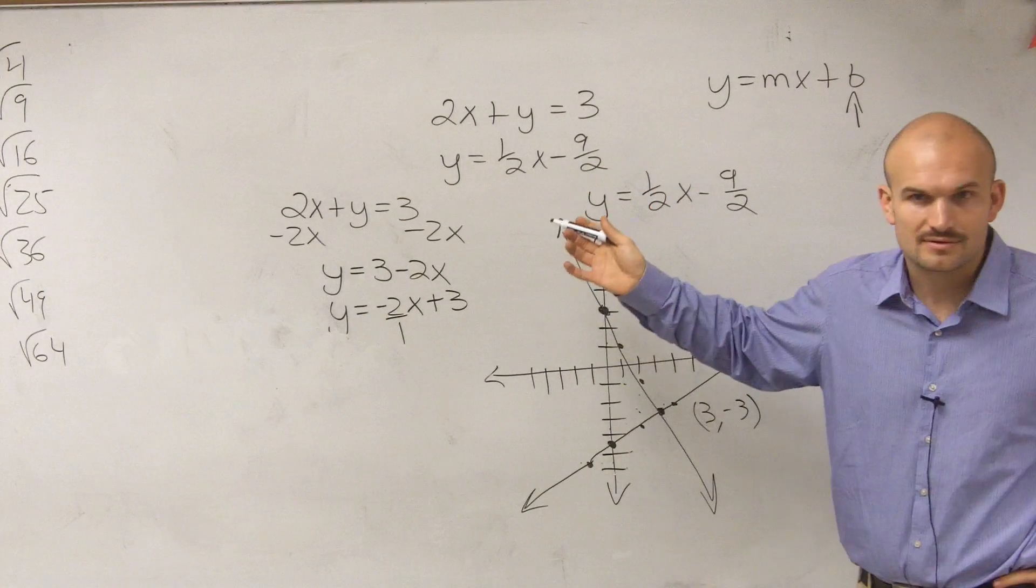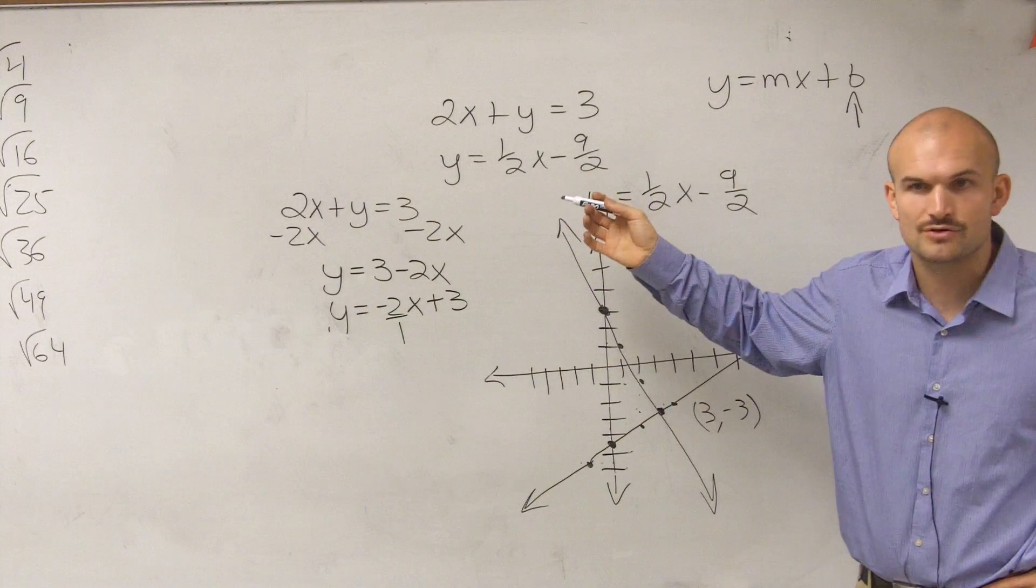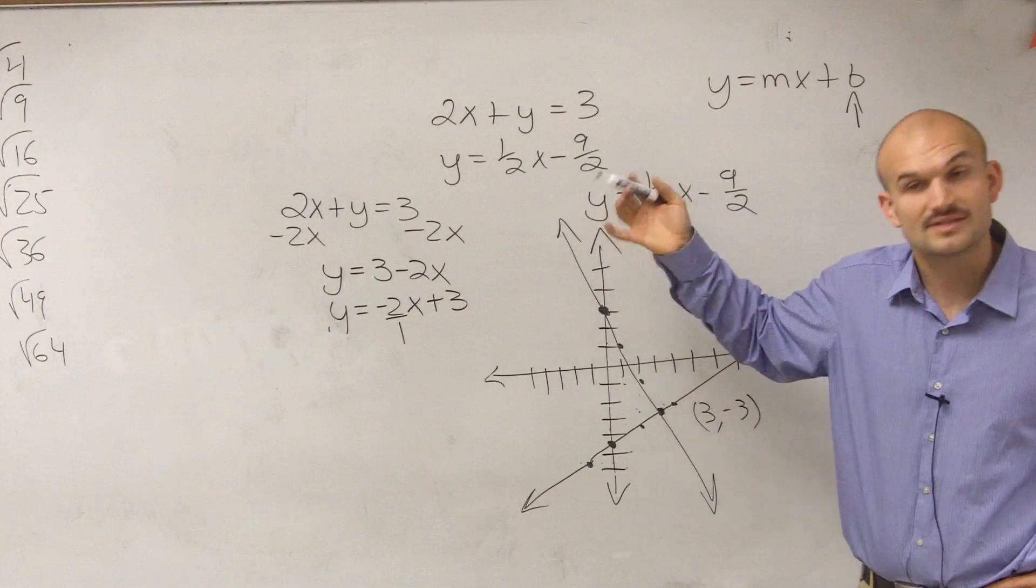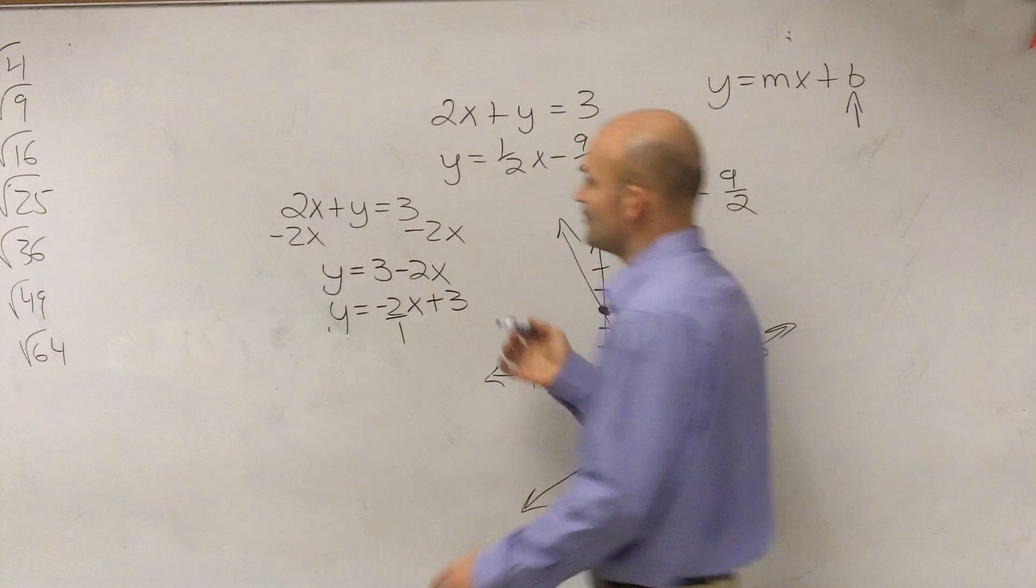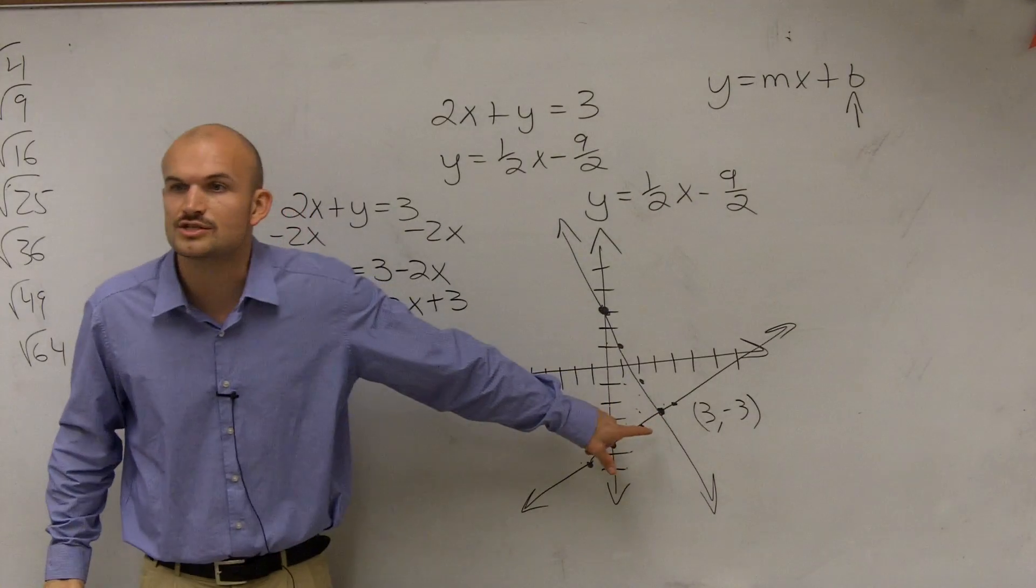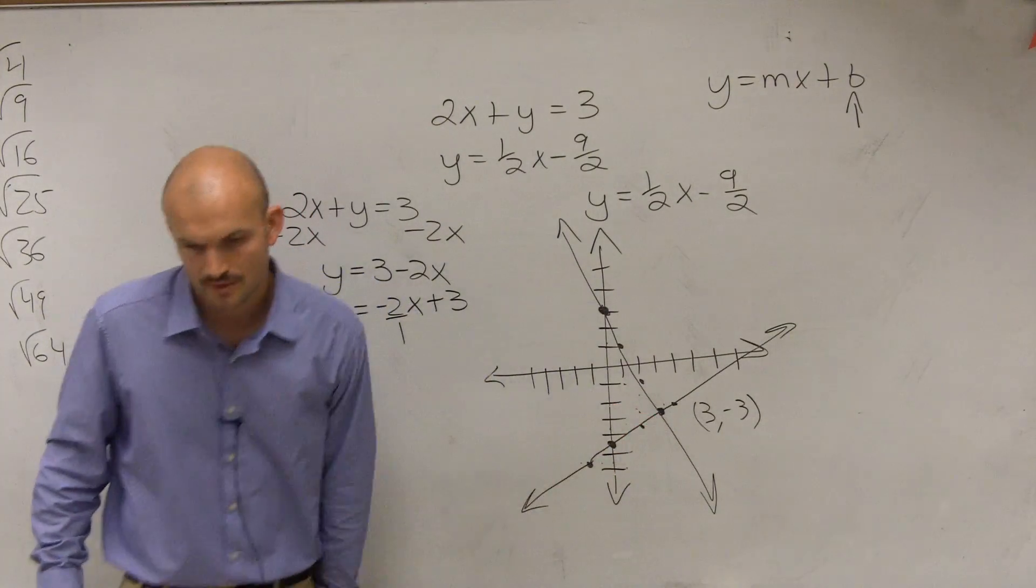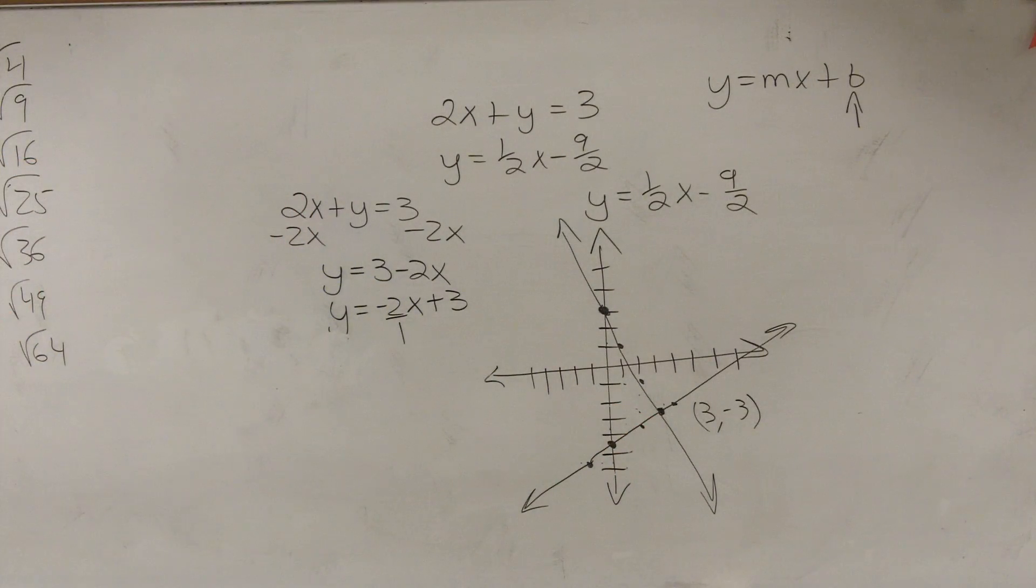Solving is what we're doing is we're finding the values that make these two equations equal to each other. So I didn't say graph. The question didn't say graph the two equations, does it? No, it says solve, right? Think about it this way. So anyways, the solution is 3 comma negative 3. Let me make an example of me.